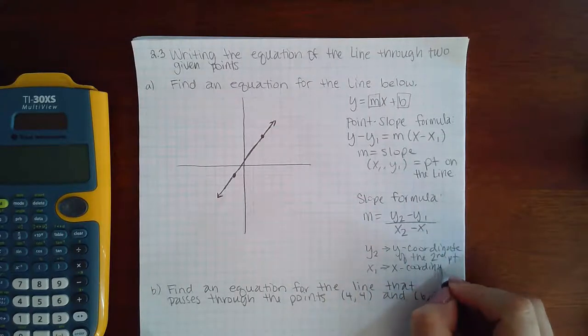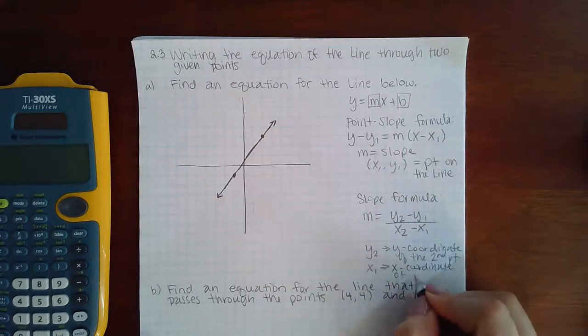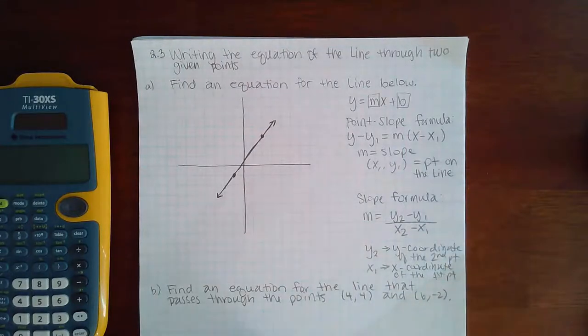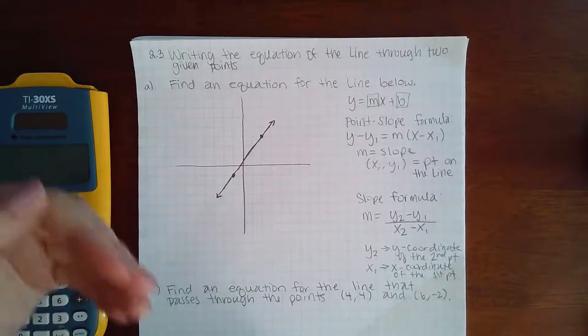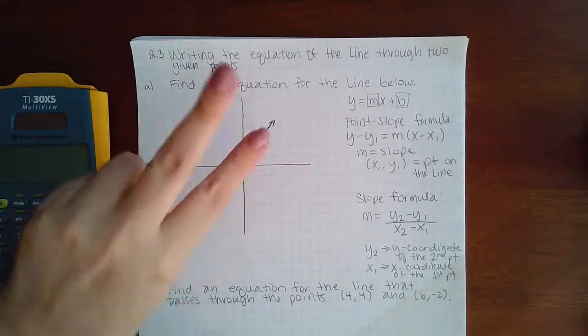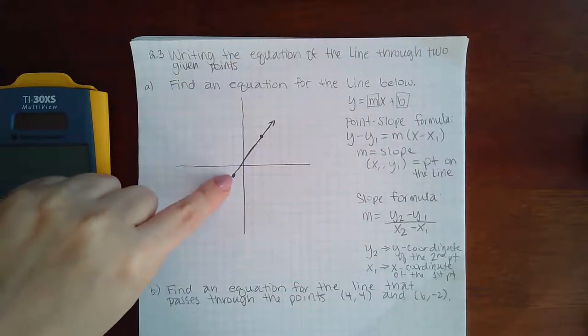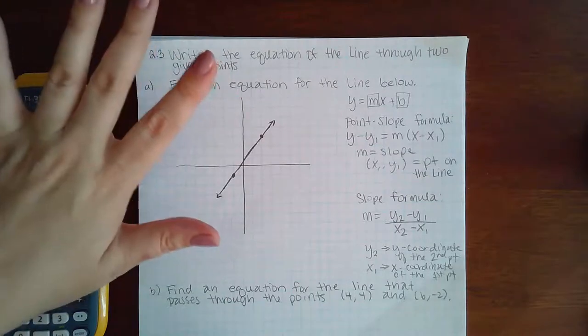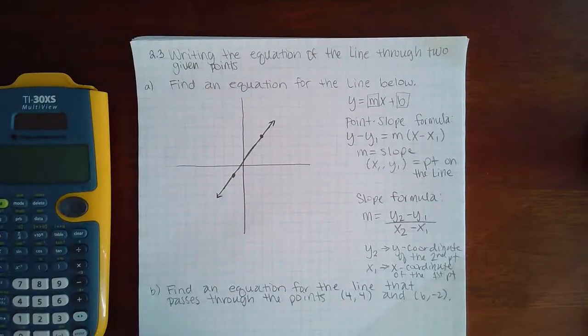And then something like x1 means the x-coordinate of the first point. So you have to label your points as the first point and the second point. Now if you choose to label this one as your first and this one as your second, or vice versa, does not matter. You'll still come up with the same answer.